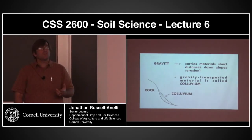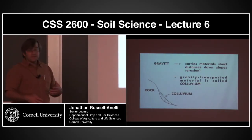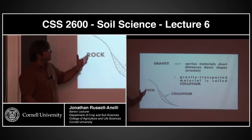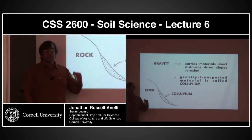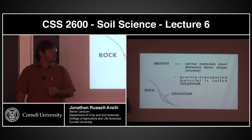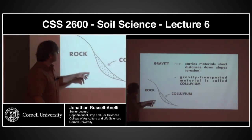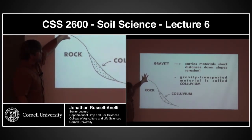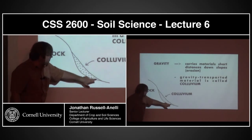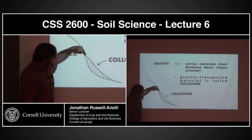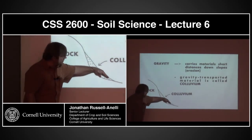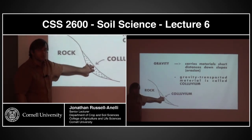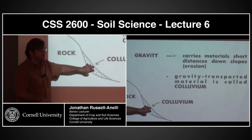We also have gravity. Gravity carries materials short distances down slopes — basically erosion. This gravity-transported material we call colluvium. Material that's up here gets pulled down by gravity and creates this deposit. The angle that the material can hold its bearing strength on is called the angle of repose.